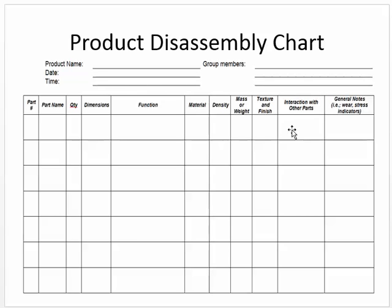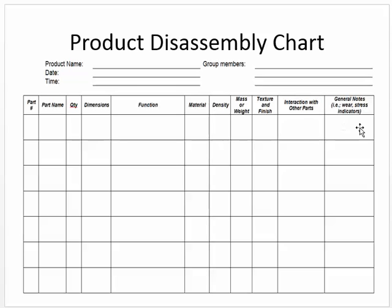Interaction with other parts — what other parts does it interact with? For example, you're not going to say the windshield interacts with the rim, because the windshield and the rim don't interact with each other. General notes — for example, do you see anything that suggests the part is under stress, meaning it's starting to wear? Does it look like it's getting ready to crack? Do you see chips? What types of things do you find that are problematic?